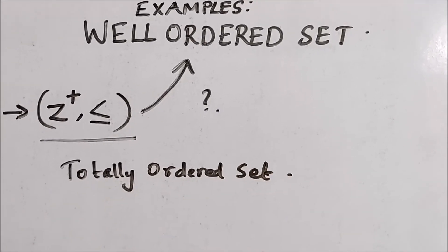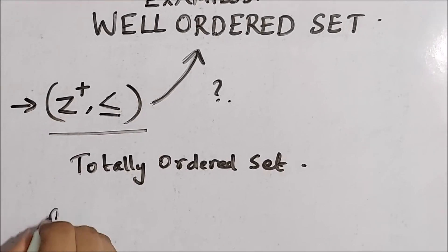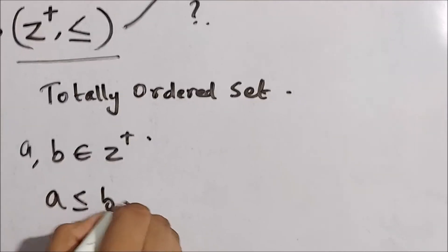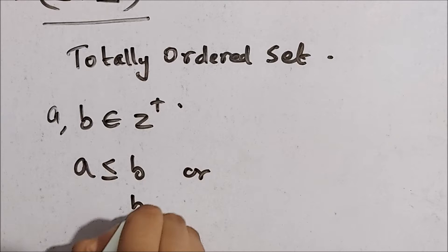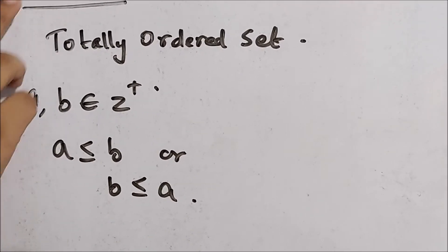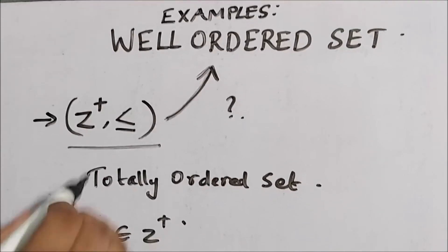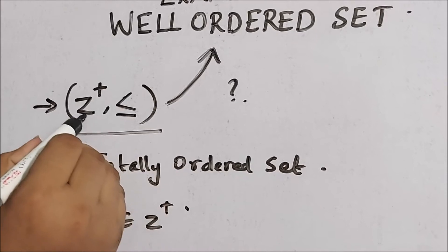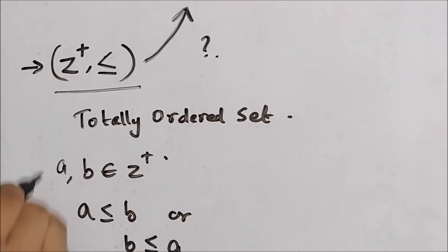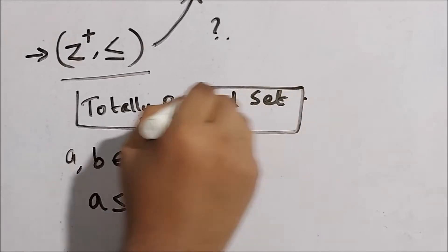If you take any two elements a and b in the set of positive integers, we know that either a is less than or equal to b, or b is less than or equal to a. That means every pair of elements in the set of positive integers are comparable. Also, the less than or equal to relation defined on this set is a partial ordering relation.